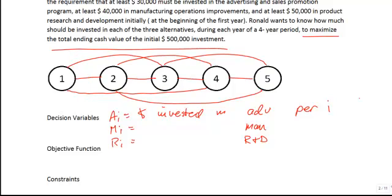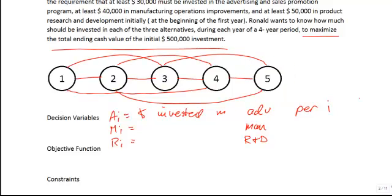The initial investment takes place at the start, and these three decision variables carry the total return at the end of the fourth year going into period five. So we're maximizing the flow into period five. This is a network flow model, and network flow models imply balance of flow constraints. Money is flowing through this network. In the first period we have $500,000 to invest, and at the end we want as much as possible but have no real demand. So supply is $500,000, demand is zero, meaning supply is greater than demand, and our balance of flow constraints will be greater than or equal to.